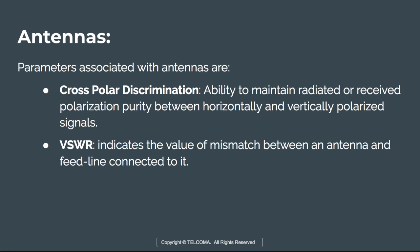The next parameter is VSWR — Voltage Standing Wave Ratio. It indicates the value of mismatch between an antenna and the feed line connected to it, and determines how efficiently power is radiated between the radio and antenna at the operating frequency. Typically, a VSWR value of 2 is considered suitable for most antenna applications.